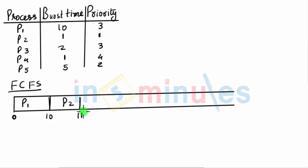After this, P3 executes for 2 units. Next is P4 which executes for 1 unit, making it 14. Finally, P5 executes for 5 units, ending at time 19.